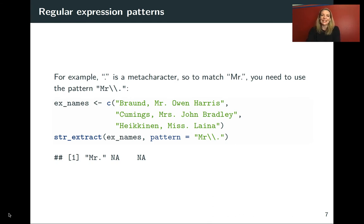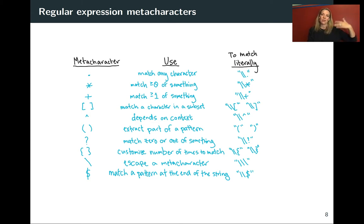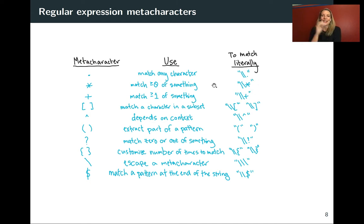So this is something to note: the period is a meta character, so you need to protect it. Here are all the meta characters in regular expressions in R. The period matches any character; to match it literally, use two backslashes then the period. The asterisk will let you match none or more of something, while the plus requires at least one but will also pull out extras. If you want to literally match an asterisk or plus sign, you need two backslashes before to protect them.